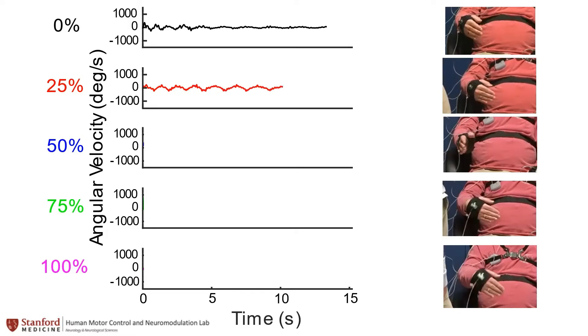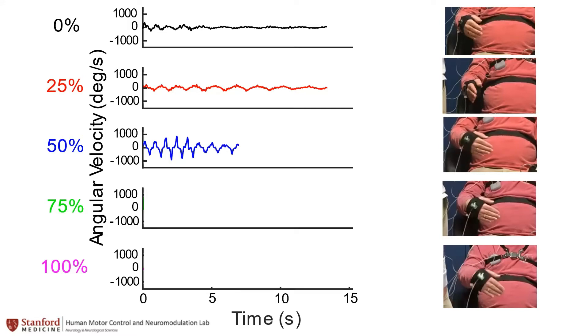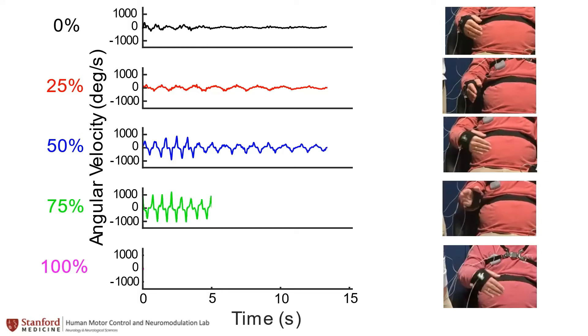Participants were asked to perform this task at 5 different randomized intensities of DBS between 0 and 100% of their clinical stimulation while we recorded synchronized neural and kinematic signals. We saw that performance improved across participants as stimulation levels were increased towards 100% of clinical stimulation.